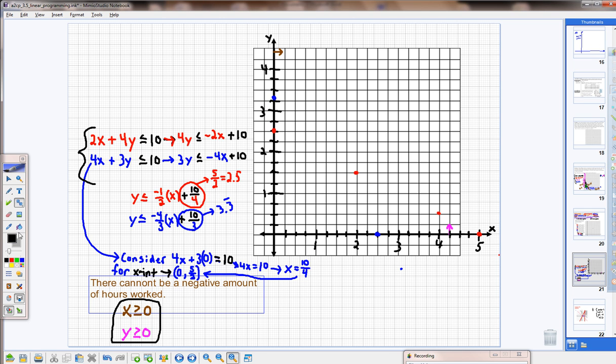All right. Graphing that line, that solid line, I know that I'm going to shade below that line. I'm going to go ahead and draw an arrow for now. Instead of shading, just draw an arrow. I'm shading below.